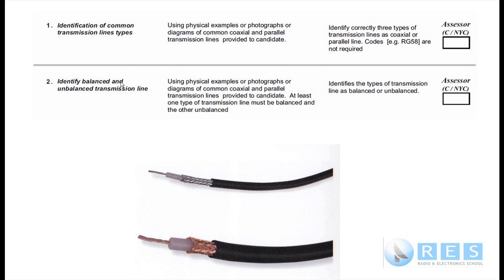And number 2: identify balanced and unbalanced transmission line. Using physical examples or photographs or diagrams of common coaxial and parallel transmission lines provided to the candidate, at least one type of transmission line must be balanced and the other unbalanced, and the candidate is required to identify transmission lines as either unbalanced or balanced.